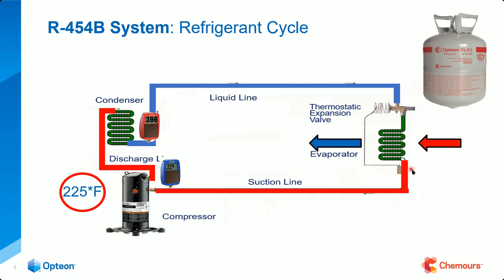As it picked up that superheat — this bulb is filled with refrigerant. Most of the time it's the same refrigerant that's inside the system, but not always, and it doesn't interact with the refrigerant in the system. Another pressure-temperature relationship: it expands when it gets warmer, higher superheat, pushes pressure down on the diaphragm and gives it more flow, allowing more liquid until it gets satisfied and then it adjusts itself. That's the cool thing about a TXV system.